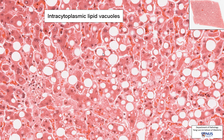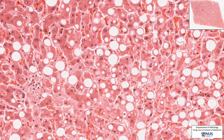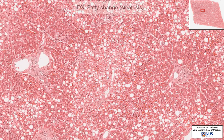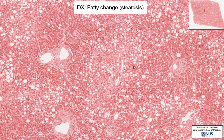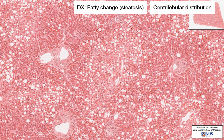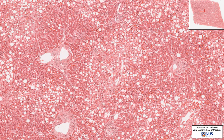The lipid usually washes out during processing of the slides because we use fat solvents. So what we see is this remaining empty space, and it pushes the nucleus of the hepatocyte and the rest of the cytoplasm to the periphery. And this is the reason for this pale area. So what we are seeing is actually a fatty change or steatosis, and this is one of the responses of cells to some sort of metabolic stress.